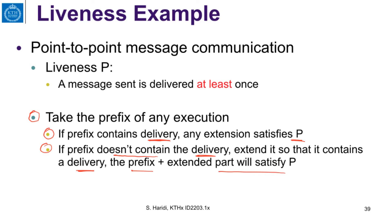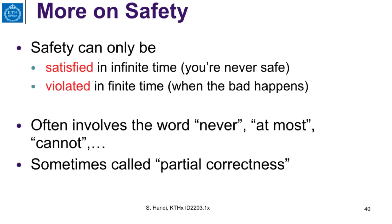What we are trying to do is characterize safety and liveness. In short, a safety property is one that can only be satisfied in infinite time — you are never definitively safe — but it can be violated in finite time when a bad event happens. When we observe a trace and things are working fine, we do not know if a bad event might occur in the future; but as soon as a bad event happens, the property is violated. Safety properties often involve words like never, at most, cannot, and are sometimes called partial correctness.